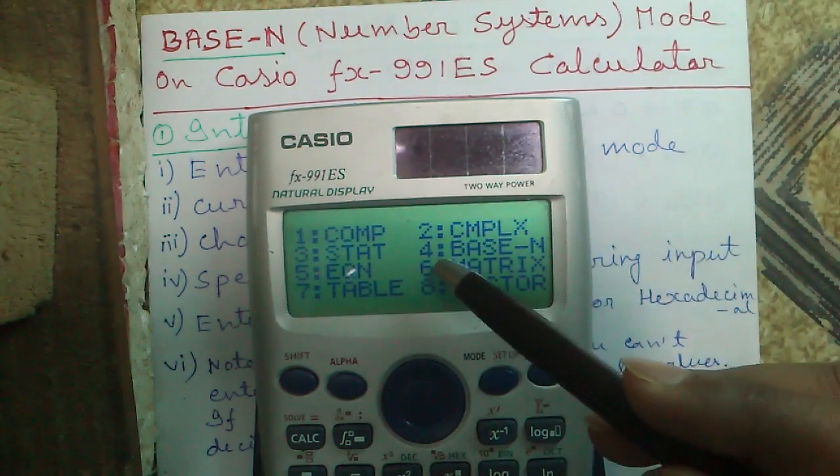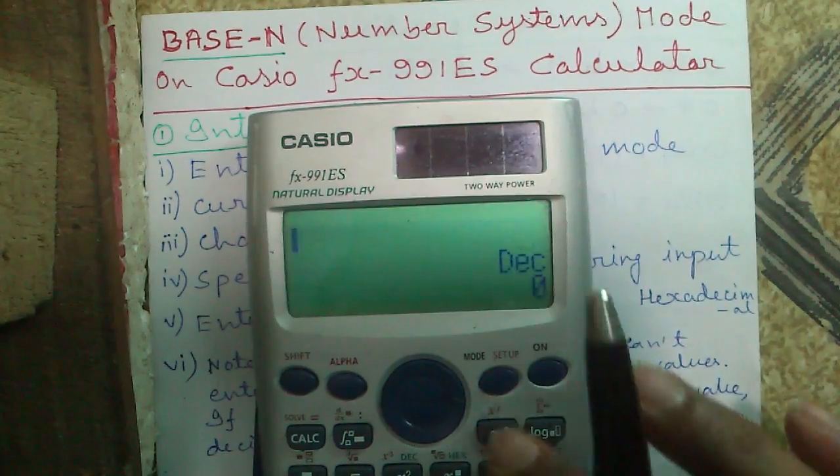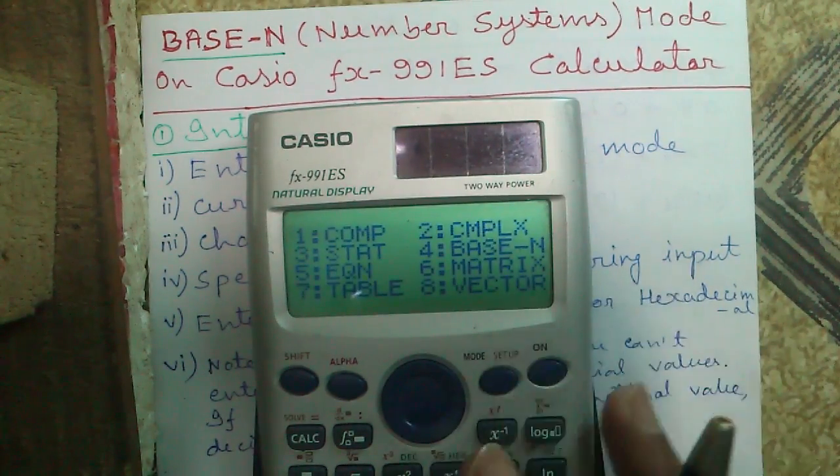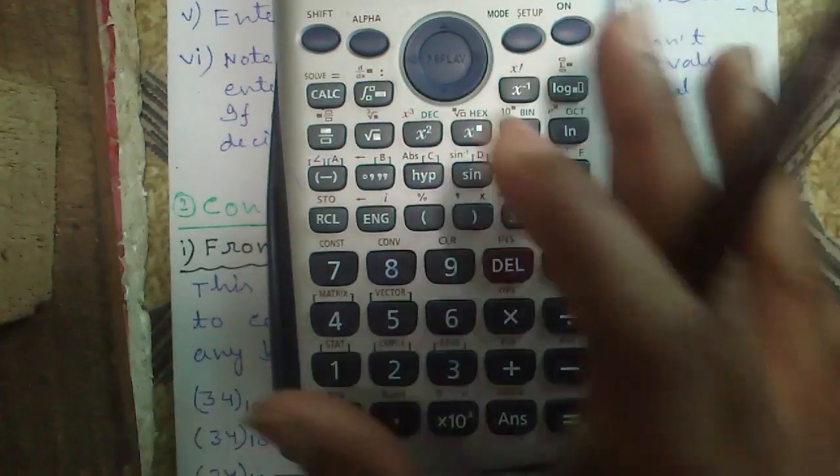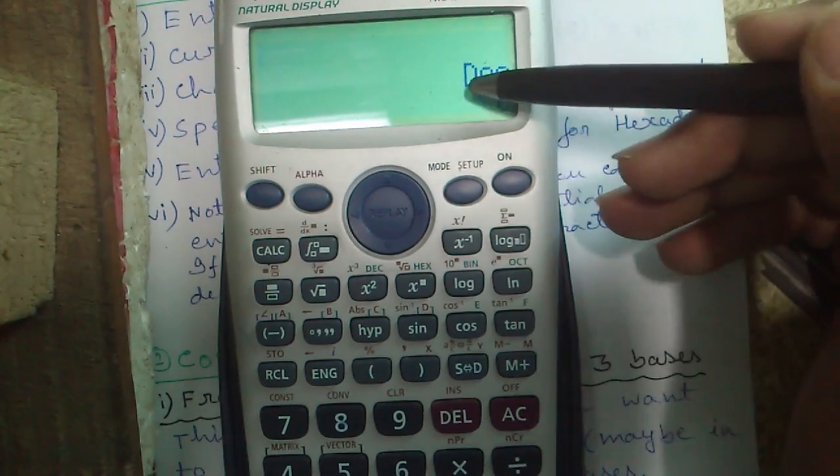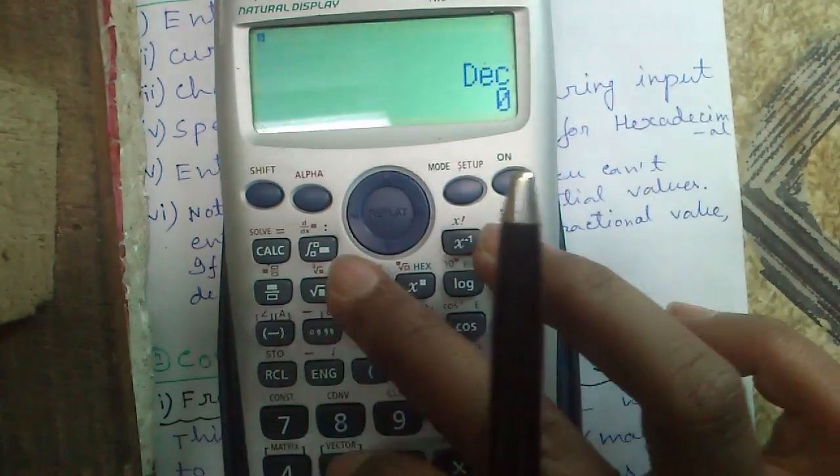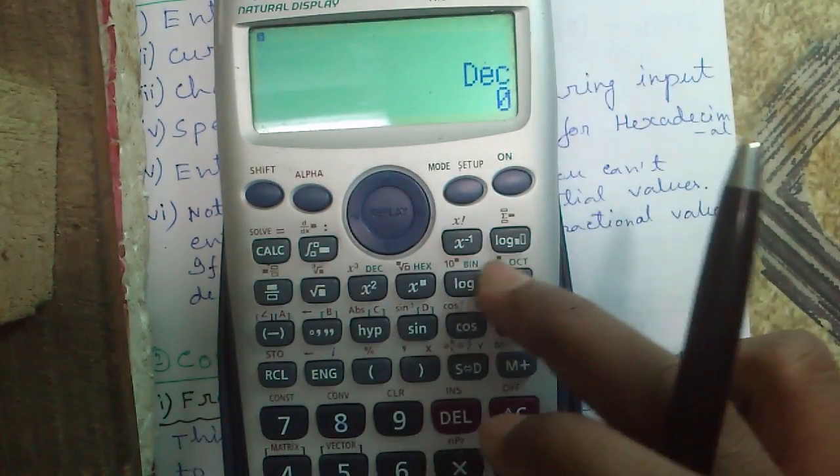And in this video, I will tell you about mode 4 or Basin mode of this calculator. To get into Basin mode, press this mode button and 4. And this is your default base. By default it is decimal. To change it, press shift and these 4 buttons. This one for decimal, hexadecimal, binary and octal.